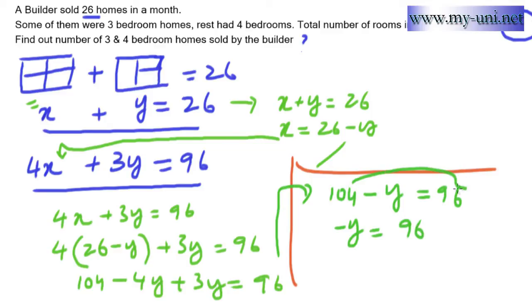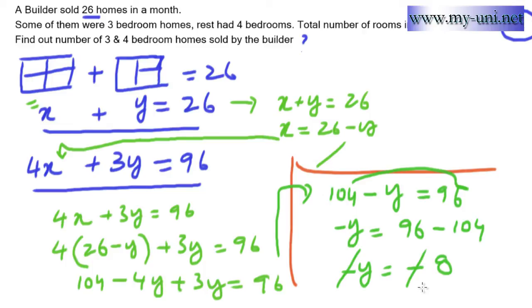So we have 104 minus y equals 96. Moving 104 to the other side, the sign changes: minus y equals 96 minus 104, which gives minus y equals minus 8. The negative signs cancel, so y equals 8. This means the number of three-bedroom homes sold is equal to 8.